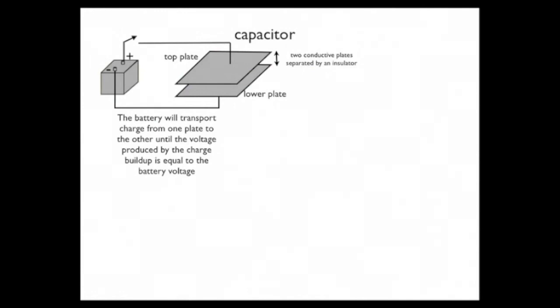Now let's consider in more detail how a capacitor works. As I've indicated, it's nothing more than two conductive plates separated by an insulator. In this case, the insulator is air, but it could be anything, so long as it doesn't conduct electricity.